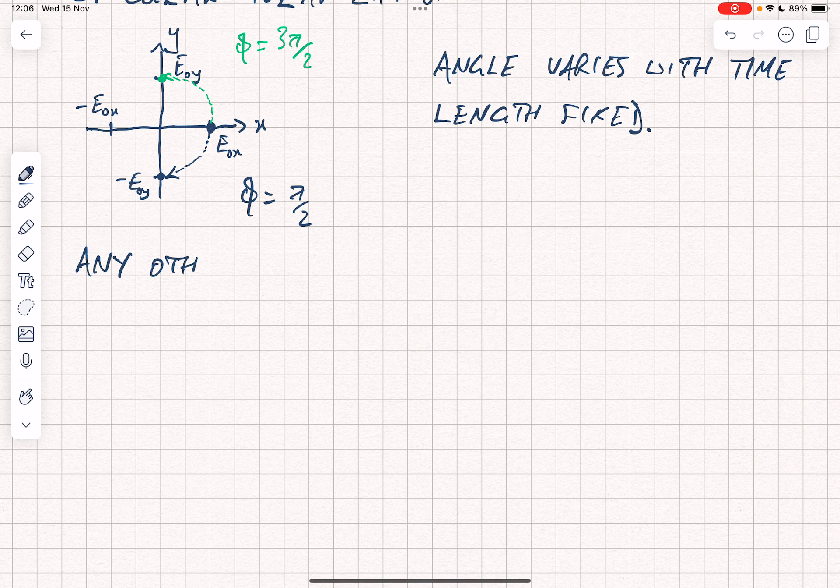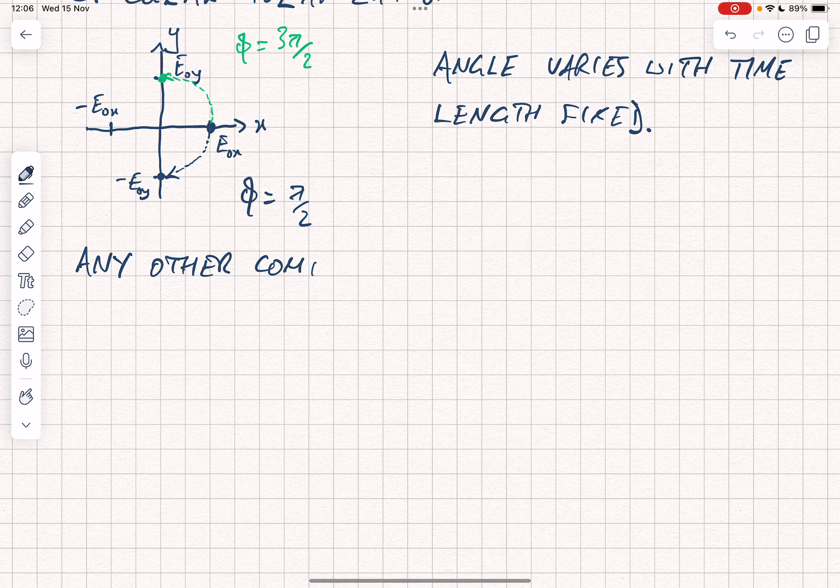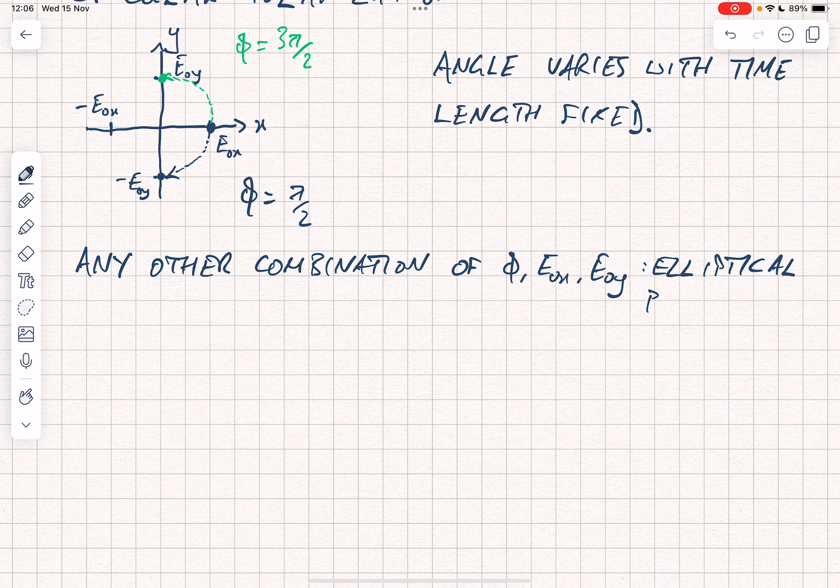Any other combination of phi, e0x, and e0y gives elliptical polarization. You could have, for instance, the field vectors ex and ey being of different lengths but having phi equal to pi over 2 or 3 pi over 2. In that case you'd have an ellipse with the major axis aligned along the x or y axis. Or you can have a situation where phi takes on any value that isn't 0, pi over 2, pi, or 3 pi over 2, in which case the orientation of the ellipse is going to be away from the axes.